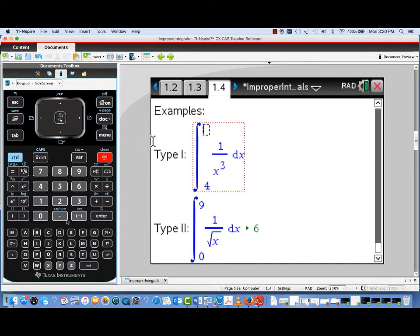Both of these converge to a specific numerical value. Now to see why, I'm going to actually replace the infinity symbol in this Type 1 improper integral with b, and it actually calculates it in terms of b. We can see that as b gets larger and larger, this term 1 over 2b squared will approach 0, leaving us with the convergent limit of 1 over 32.